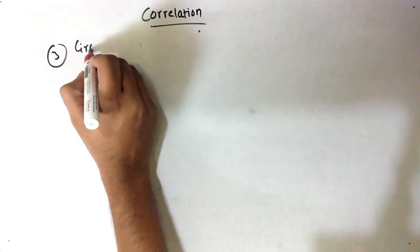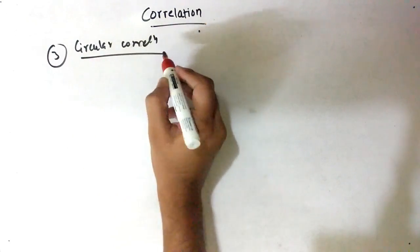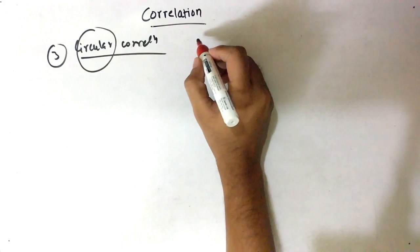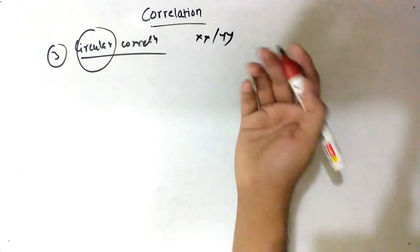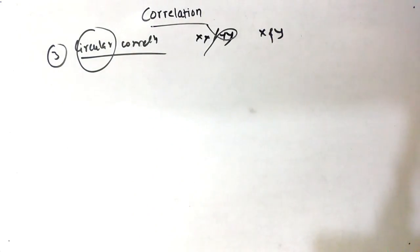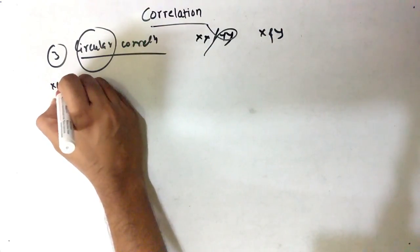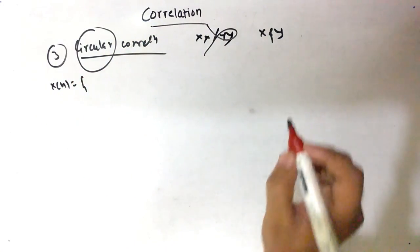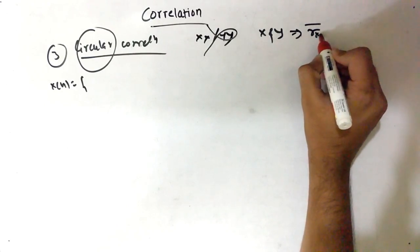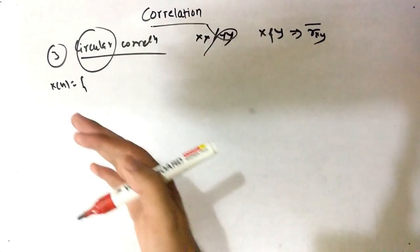Now let's talk about the third type: circular correlation. As the name suggests, this is circular correlation. Now there can be X and Y — we do have both variables. Circular correlation is represented with an overbar, written as X_bar(pi) or R_XY overbar. This representation is different from the rest. Let's take an example.